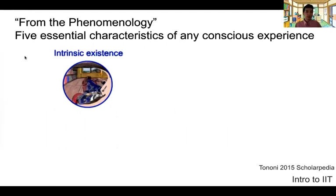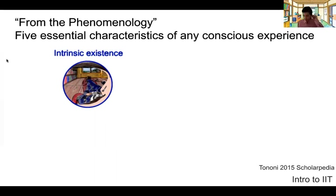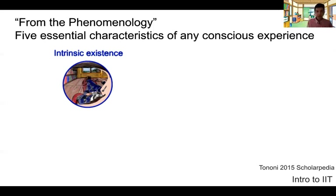From the phenomenology side, what IIT tries to do is first identify five essential characteristics of any conscious experience. These are called axioms in IIT literature. They are supposed to reflect the true nature of consciousness when you think about it carefully in any example of conscious experience. It may not be immediately easy to understand, but this is the most important aspect of the theory.